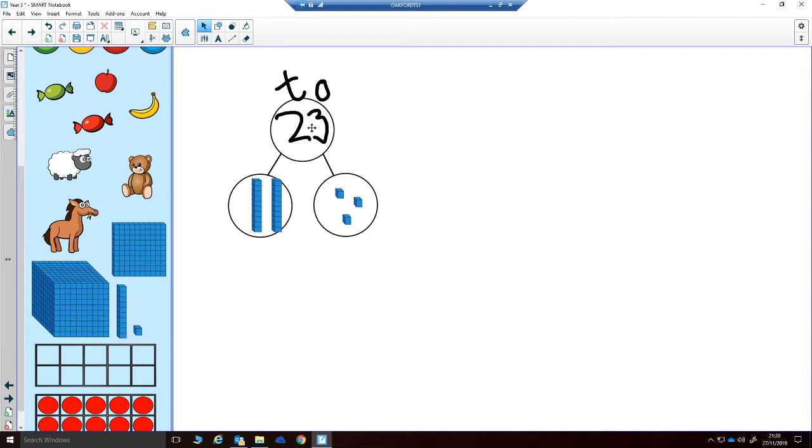Let's just double it to start with. So at the moment I've got one group of two tens, one group of 20. I need to double that because it's times 2, so actually I need two groups. I'm going to need two groups for the ones as well. Then I'm very simply going to add those together.